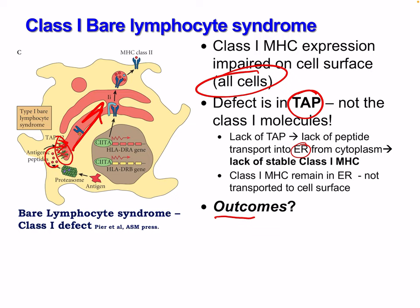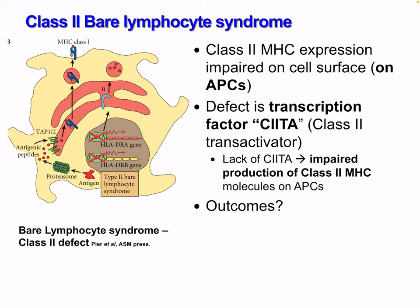Think about what this means — we talked about MHC class 1 being involved in CTL or CD8 T cells. What are those super important for? We looked at intracellular viruses and similar pathogens, meaning this deficiency has significant consequences for fighting intracellular infections.